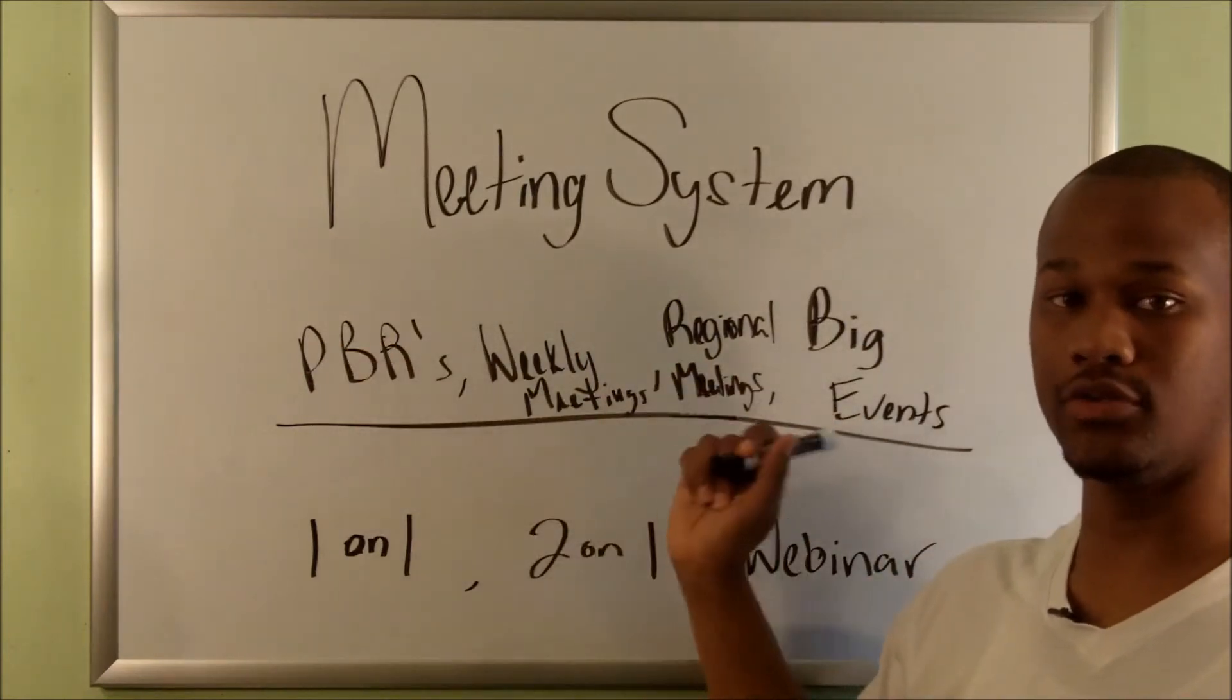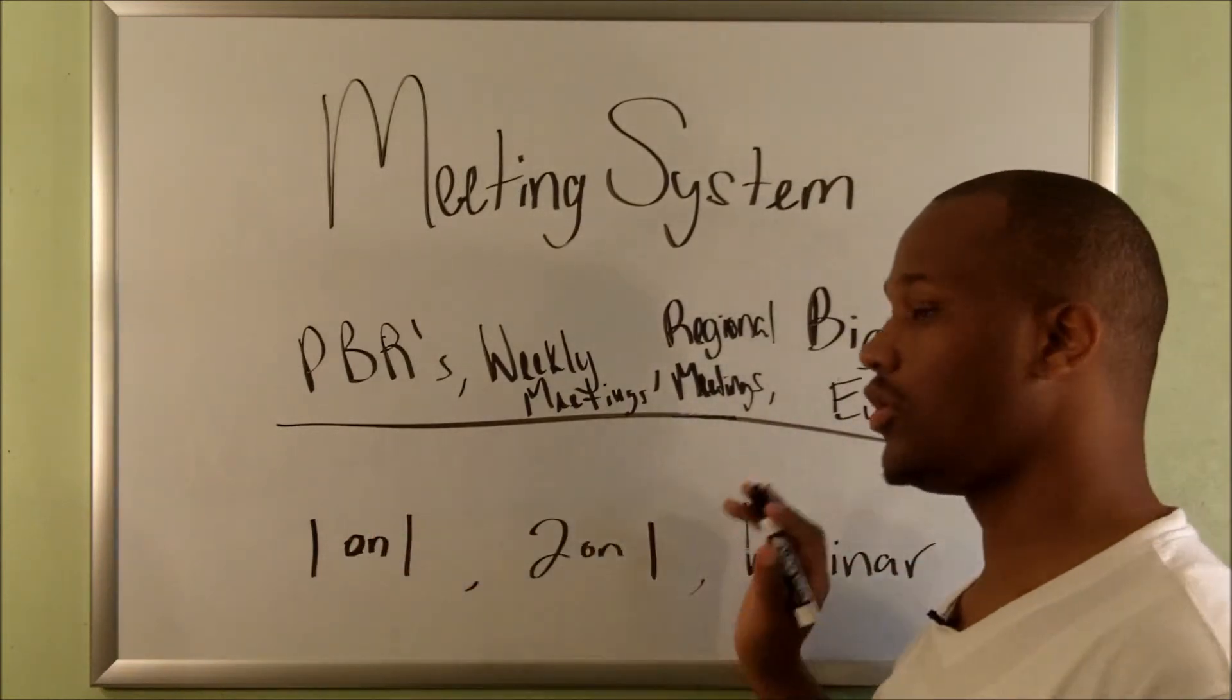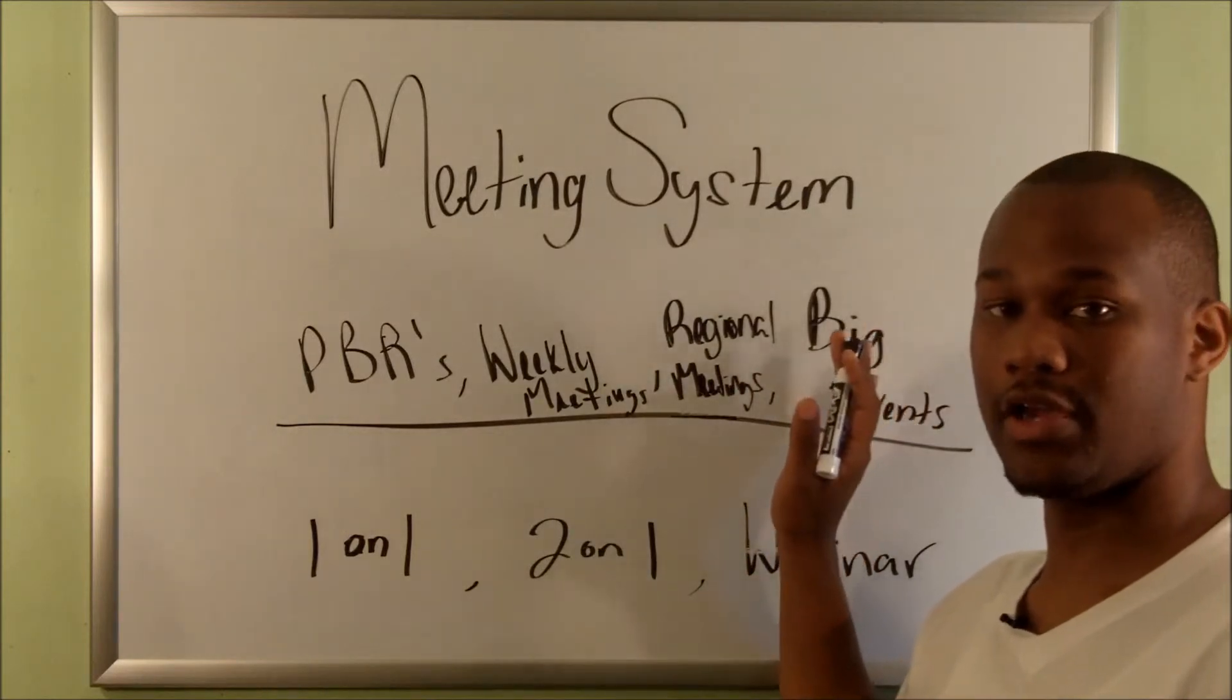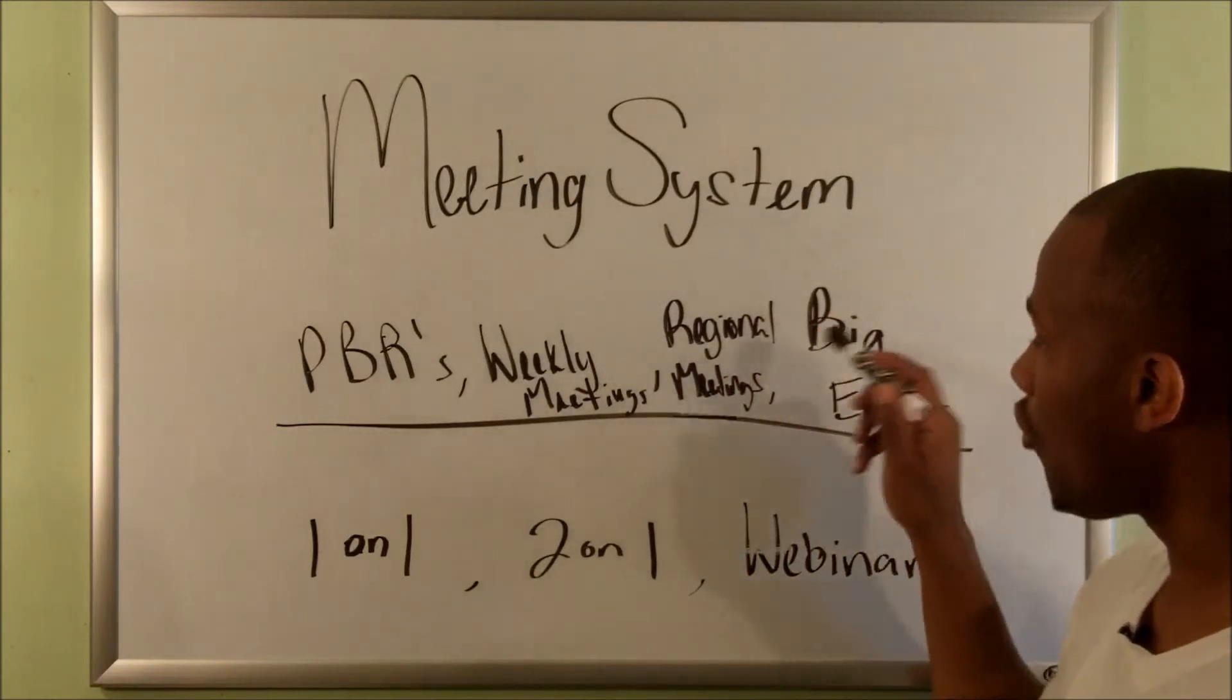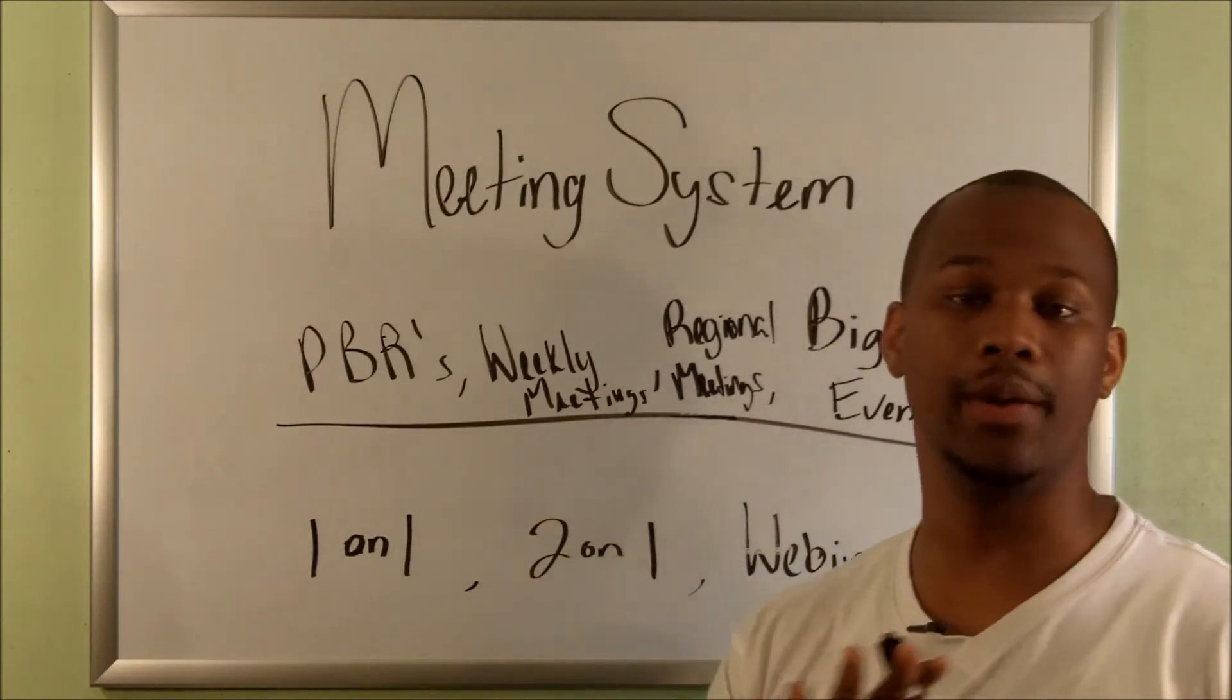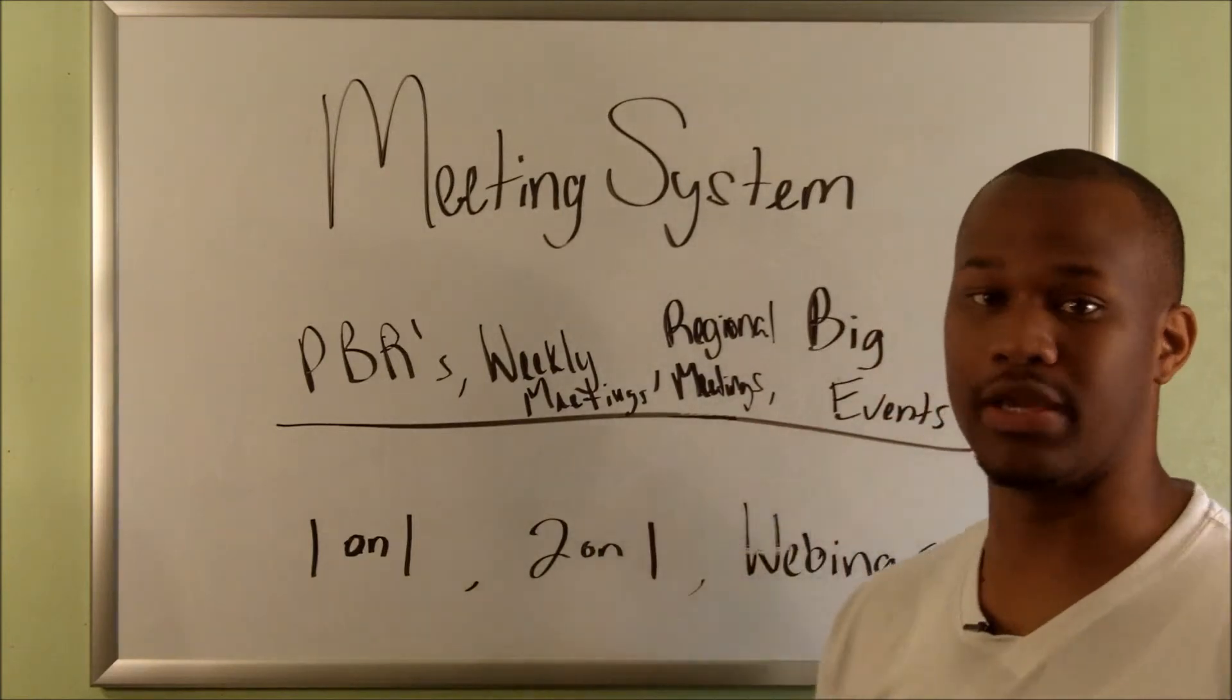It really goes in this pattern: one-on-one, two-on-one, webinar, private business reception, weekly meeting, regional, and big events. Once you're able to get more and more people to the big event, that's where you're going to make the money. You'll be able to conquer the entire world simply by getting more people to big events.